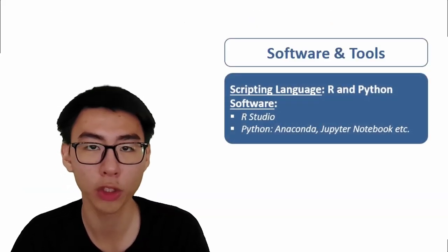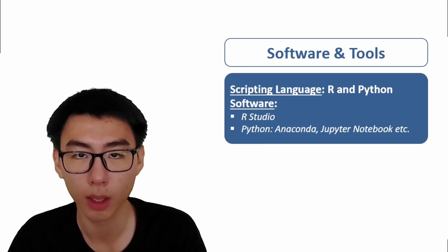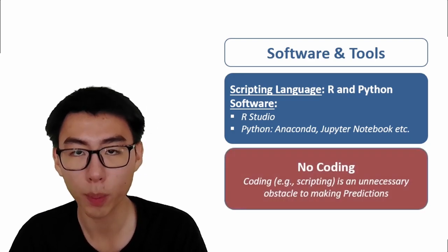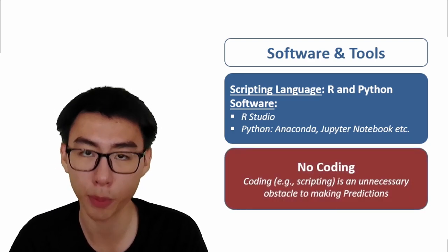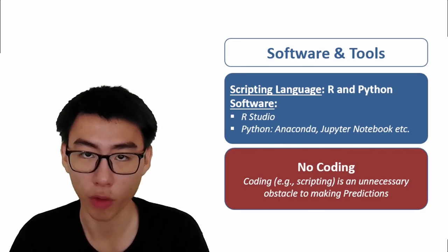In terms of software and tools, the common ones are R with RStudio and Python with Anaconda and Jupyter Notebook. With advancements in Industrial Revolution 4.0, coding will become an unnecessary obstacle to making predictions. In the near future, making predictions does not require coding.